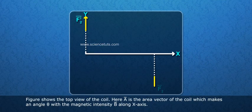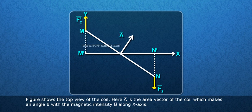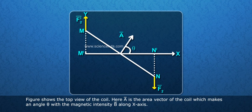Figure shows the top view of the coil. Here, A bar is the area vector of the coil which makes an angle theta with the magnetic intensity B bar along X axis.